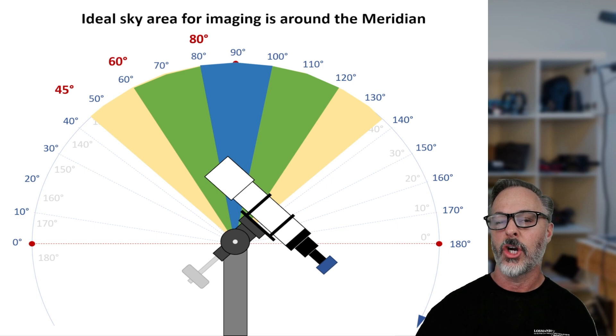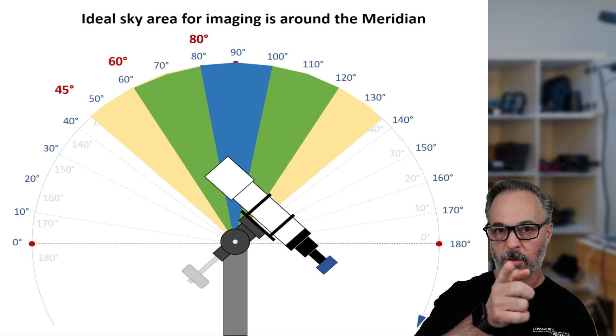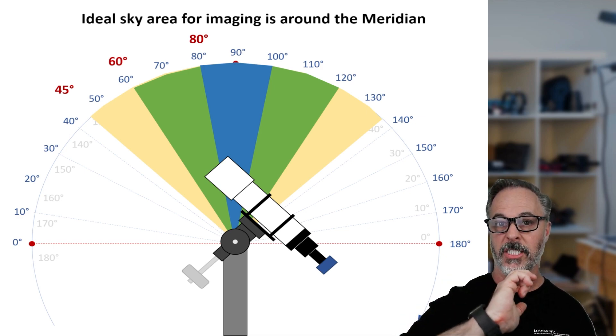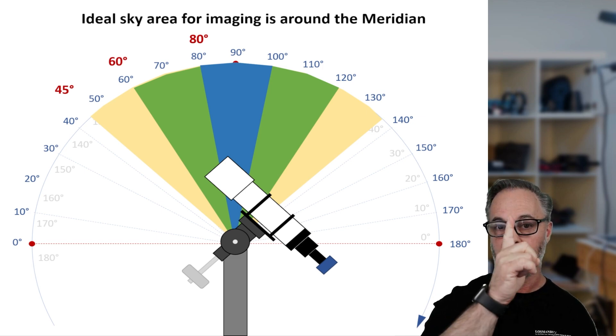So I use the terms meridian and zenith somewhat interchangeably, and that's not entirely true. The meridian is the invisible line from wherever you're standing that can be drawn from directly north to up and overhead through the zenith to directly south. The zenith of course is the directly straight up above you.